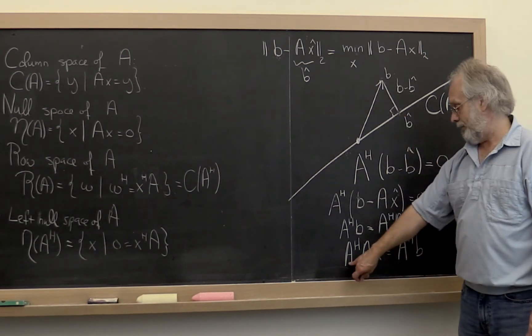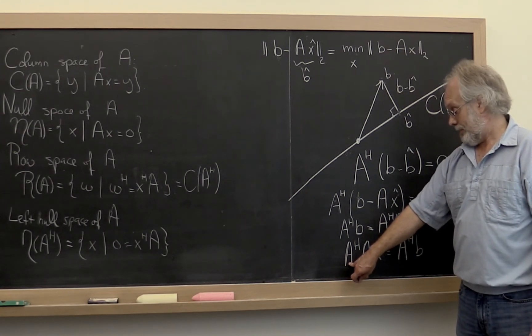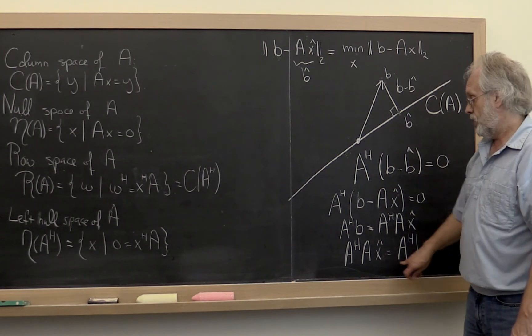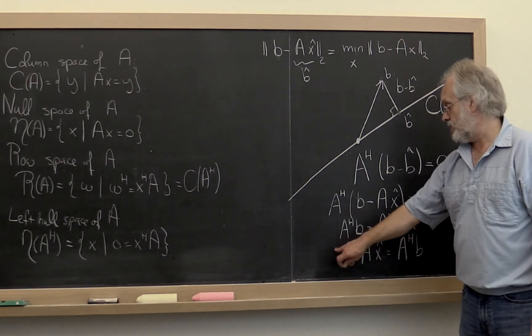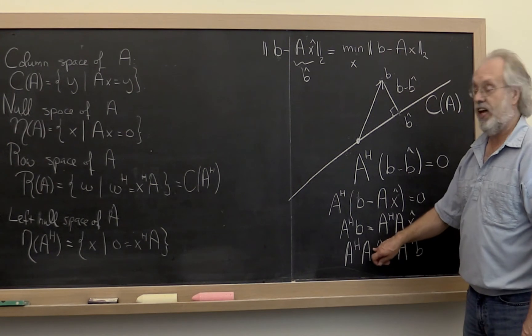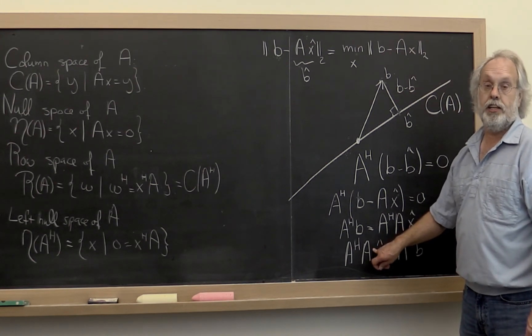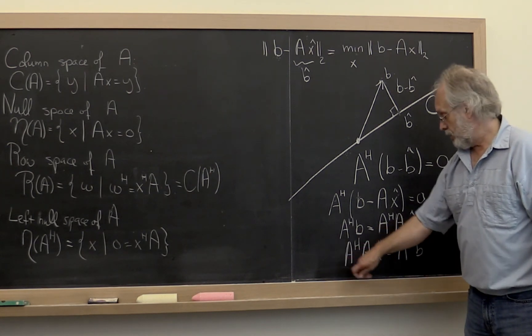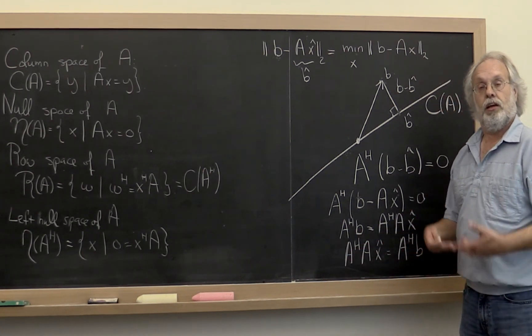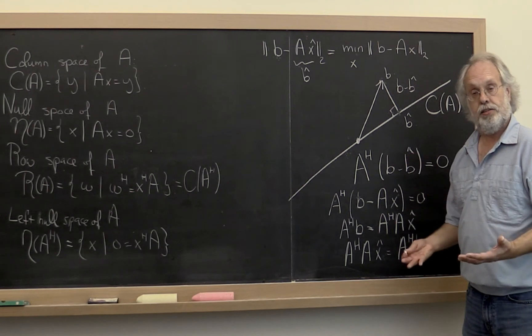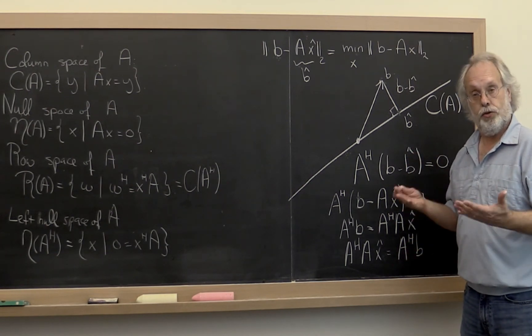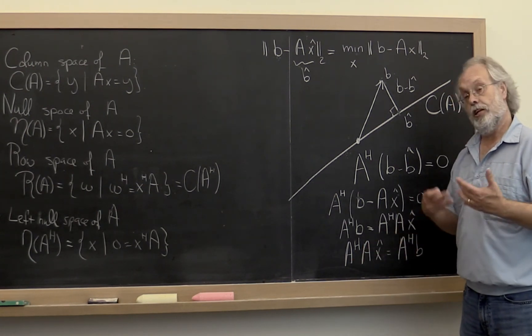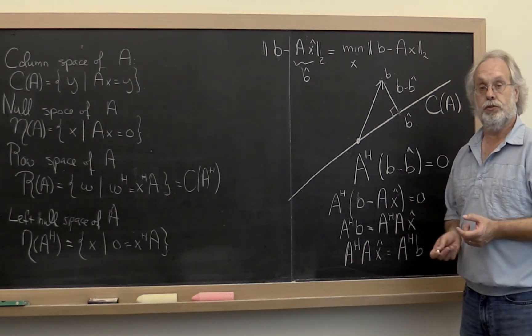Now, especially if A has linearly independent columns, then this is relatively straightforward because you can prove that if A has linearly independent columns, then A Hermitian A has linearly independent columns. In other words, it has an inverse. So then literally it just comes down to solving a linear system that only has a unique solution and you're done. If A has linearly dependent columns, then things get a little bit trickier.